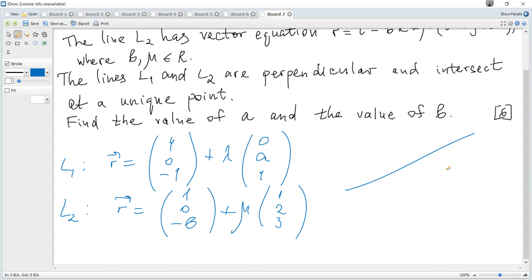Direction vector is any vector which is parallel to the line. And when two lines are perpendicular, the direction vectors are also perpendicular, and if two vectors are perpendicular, the dot product is equal to 0.